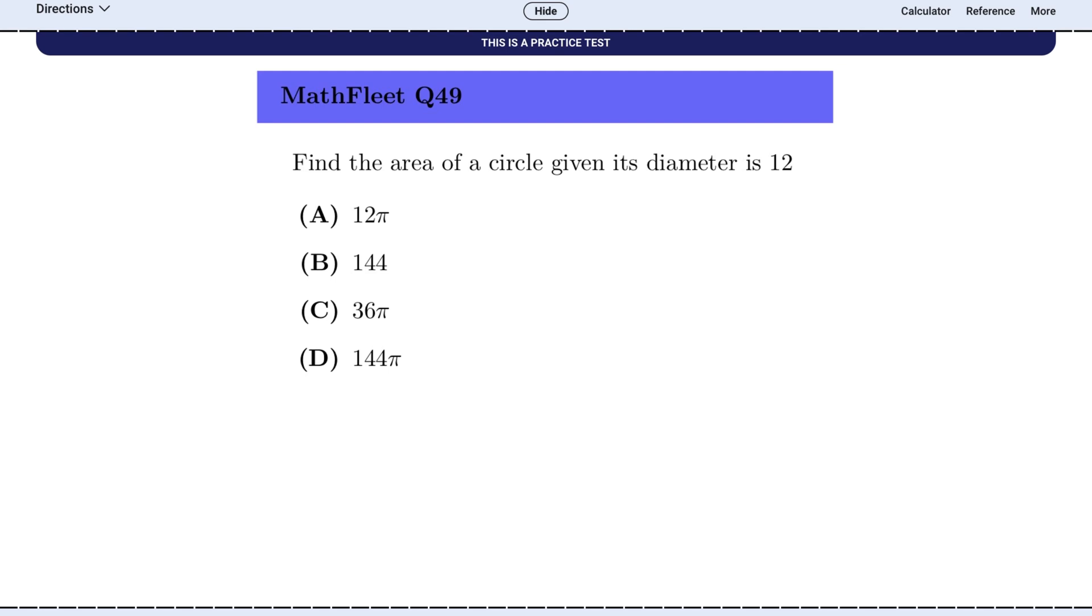Let's look at this classic example. A question about the area of a circle gives you the diameter. Your brain is trained to hear area of a circle and think pi r squared. You see the number 12. So what's the most common mistake? Forgetting that the radius is half the diameter. The trap is to just plug 12 into the formula. 12 squared is 144. And what do you know? One of the choices will be 144 pi. That's the bait. The correct way is to first find the radius. Diameter is 12, so the radius is 6. The area is pi times 6 squared, which is 36 pi.